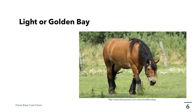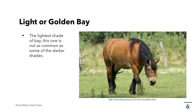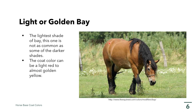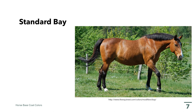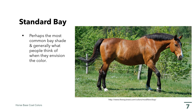One of the shades of bay is the light or golden bay. This is considered to be the lightest shade of bay and is not as common as some of the darker shades. The coat color can be light red to almost golden yellow. Another shade of bay is the standard bay, which is considered to be the most common bay shade and generally what people think of when they envision the color bay. The coat is deep red with no smutty coloration.